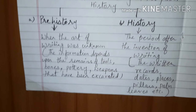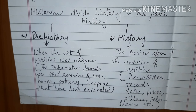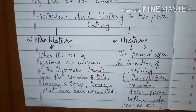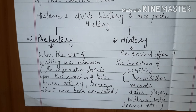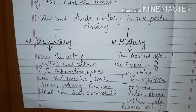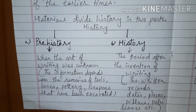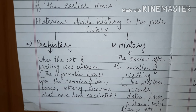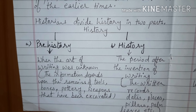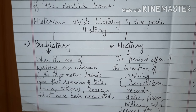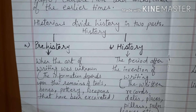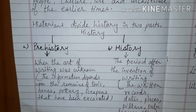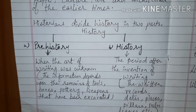What is prehistory? Prehistory refers to that period when the art of writing was unknown. Our information about prehistory depends upon the remains of tools, bones, pottery, and weapons that have been excavated. We learn about the age of artefacts through carbon dating.